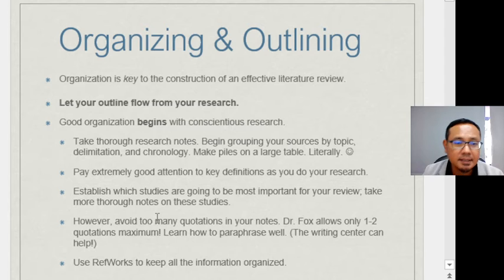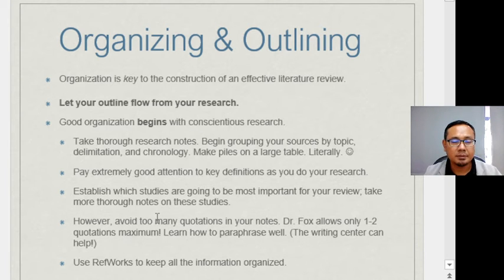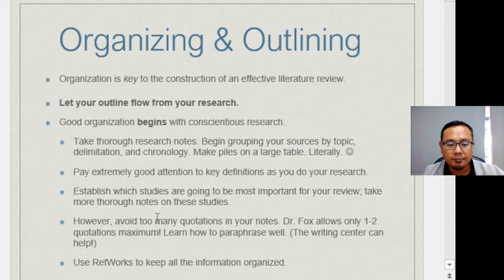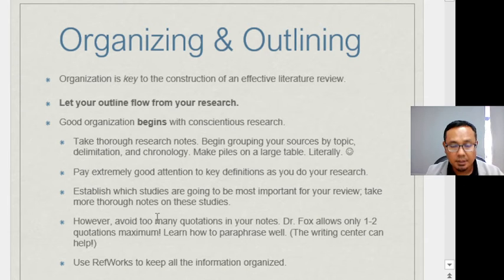Organizing how you manage your work is key to constructing an effective literature review — this is not overnight work but a continuous process. You can start by building a table organized by year, and then note how many variables each past study used. From that, you can see patterns in variable selection. That's how you organize your work to develop your literature review.